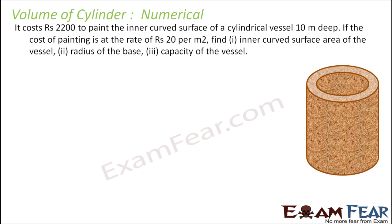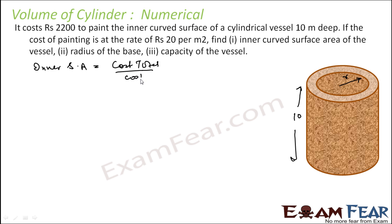It costs ₹2200 to paint the inner curved surface area of a cylindrical vessel that is 10 meters deep. The cost of painting is ₹20 per meter square. Inner surface area = total cost ÷ cost per meter square = 2200 ÷ 20 = 110 meter square. That is the internal curved surface area of the vessel.